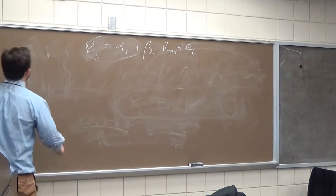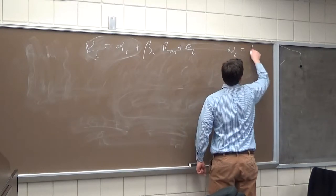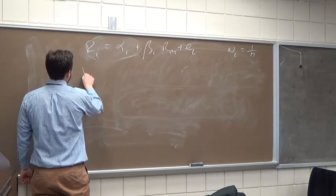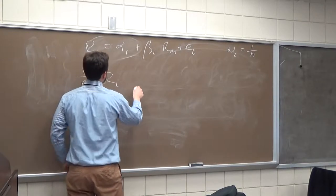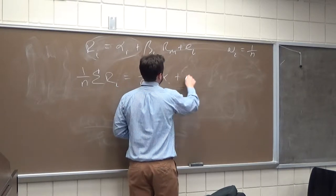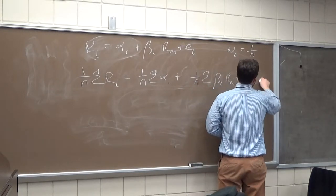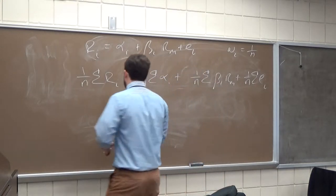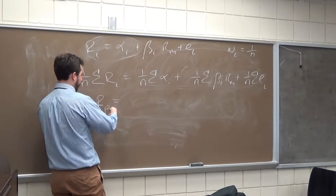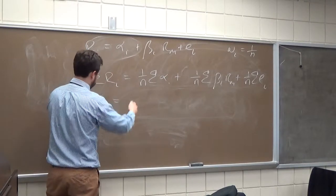If the portfolio is large enough, we can approximate the weights of all stocks as 1 over N. Then the return on the portfolio is just the weighted sum: (1/N) times the sum of alpha sub I, plus (1/N) times the sum of beta sub I times the return on the market, plus (1/N) times the sum of E sub I. We can rewrite this as the portfolio alpha, plus the portfolio beta times the market return — since the portfolio beta is just the weighted average of individual betas — plus the error term.